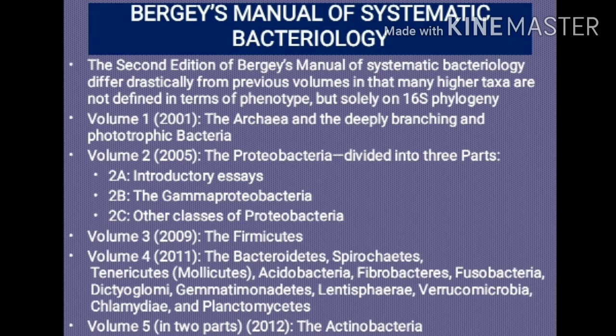Volume 4, published in 2011, contains the Actinobacteria — high G+C gram-positive bacteria. Volume 4 also contains other gram-negative bacteria including Bacteroidetes, Spirochetes, Tenericutes, Mollicutes, Acidobacteria, Fibrobacteria, Fusobacteria, Dictyoglomi, Lentisphaerae, Verrucomicrobia, Chlamydia, and Planctomycetes. Volume 5, published in 2012, contains the Actinobacteria in two parts.